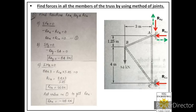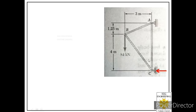So this was the second step: first step was to label the reactions provided by supports in the truss, then the second step was to use the three equations of equilibrium to find the unknown reactions. Now in the third step we have to find the forces in the members of this truss.